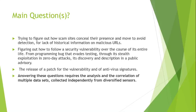The main questions of the paper include: figuring out how scam sites conceal their presence and move to avoid detection, due to a lack of historical information on malicious URLs. Also, how to follow a security vulnerability over the course of its entire life — from a programming bug that evades testing, through stealth exploitation and zero-day attacks, its discovery and description, a public advisory, the release of a patch, and antivirus signatures. Answering these questions requires analysis and correlation of multiple data sets collected independently from diverse sensors.